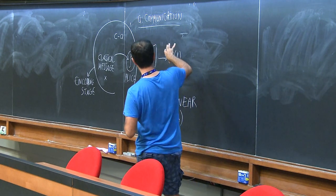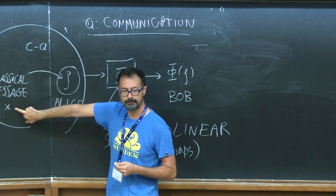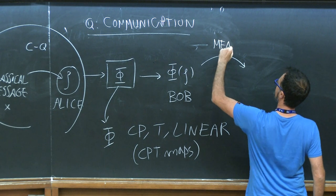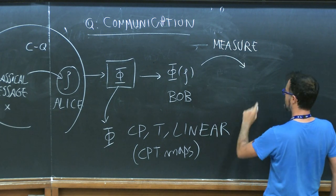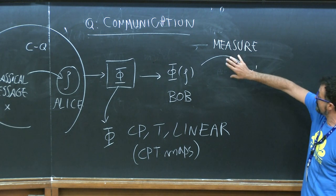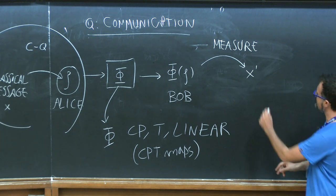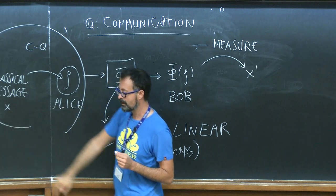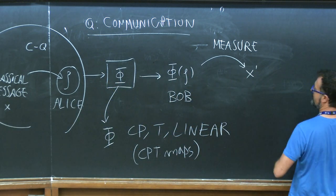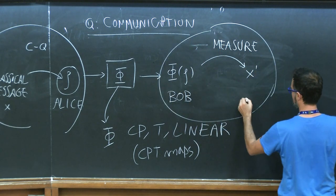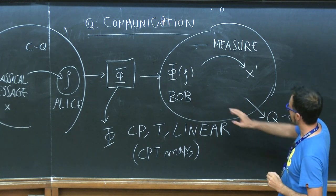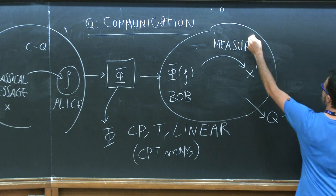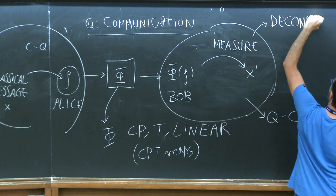Bob receives this quantum state of the carrier, transformed under the action of the noise map. From this object he would like to recover the message Alice wants to send. The best thing he can do is to measure, producing a classical outcome X prime. From this outcome he tries to guess Alice's original message. This stage is a quantum-to-classical process — you take a quantum state and transform it into a classical message via measurement — which is the decoding stage.